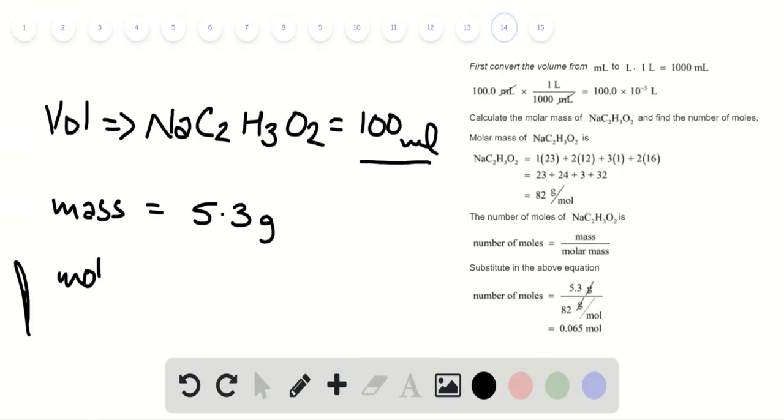From the molar mass of 82 grams, we can determine the number of moles of solute by using the formula: mass divided by molar mass. Substituting those values, we have the number of moles equals 0.065.